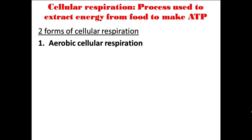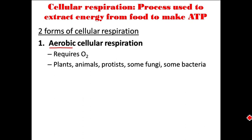As we said, cellular respiration is a process used to extract energy from food to make ATP, and there are actually two forms. The first is called aerobic cellular respiration — this is the form that requires oxygen, which is what aerobic means. This is the form that most organisms we're familiar with use: plants, animals, mushrooms, protists, and some bacteria. Because it is so common, we end up just referring to it as cellular respiration, dropping the word aerobic.